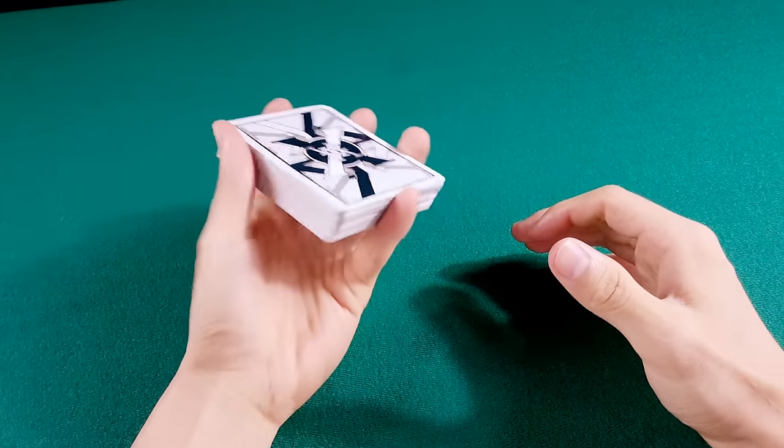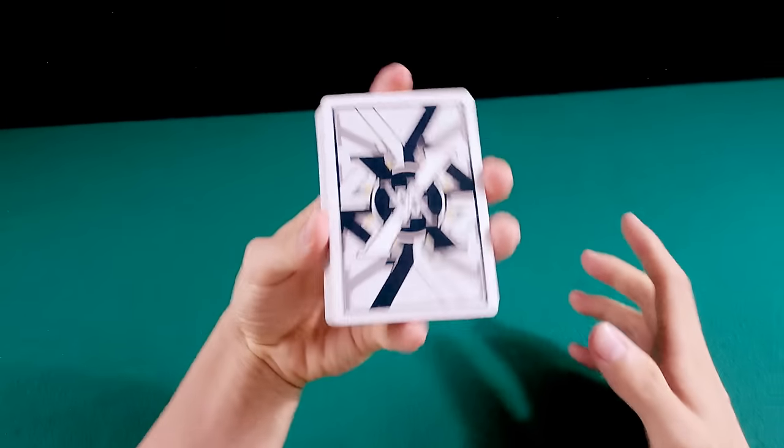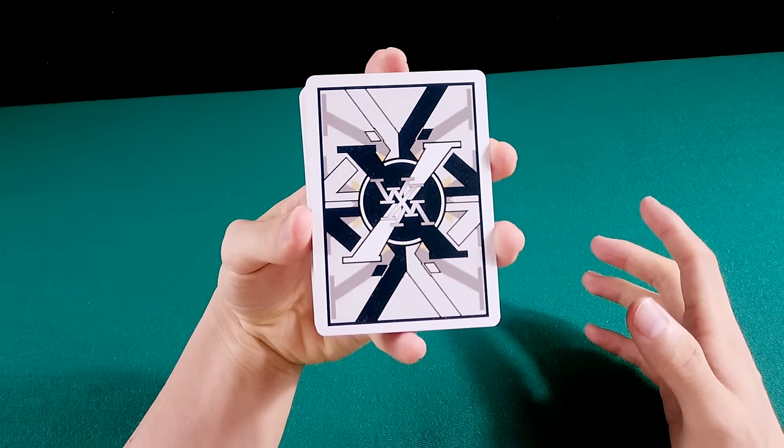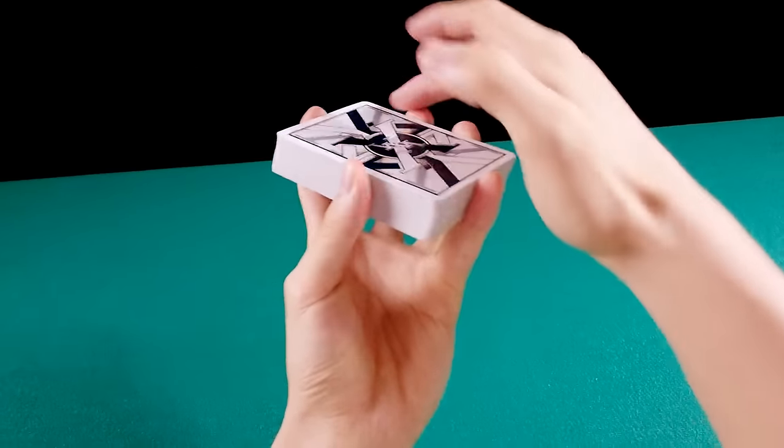Agora que você sabe fazer o corte Charlie, Revolution Cut vai ser moleza. Pegue seu baralho e vamos começar em Straddle's Grip. Este é o Grip Straddle. Lembrando que o monte tem que ficar bem na ponta dos dedos.